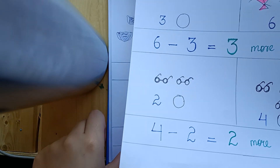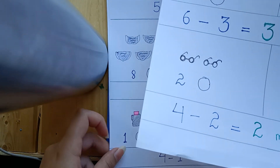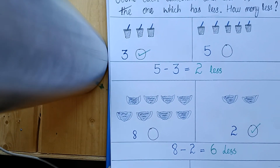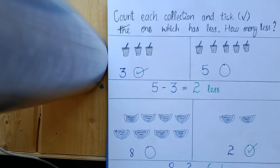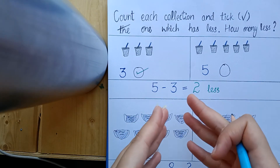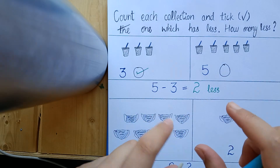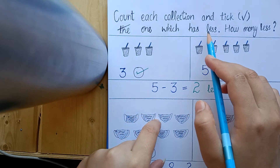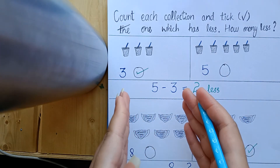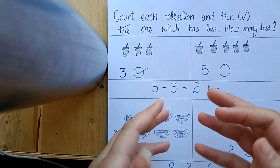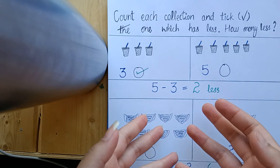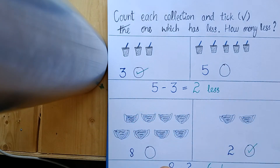That was 'more.' We used subtraction to tell how many more things there are. Now we need to tell using subtraction how many less things there are. Right? We have to do the same thing — first count, then see which collection has fewer things, click on the one with less things, and then tell how many less there are using subtraction.